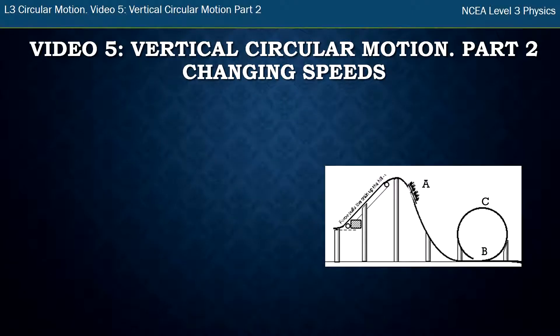Hello, this is Mr. McGovern and welcome to the fifth video in the circular motion series for Level 3 Physics. In the last video we looked at vertical circles or vertical circular motion, but that circular motion we were looking at situations where the speed is kept constant.